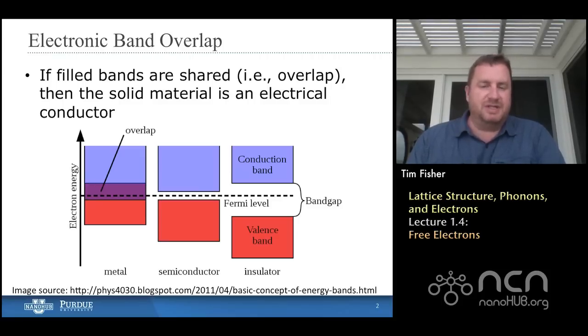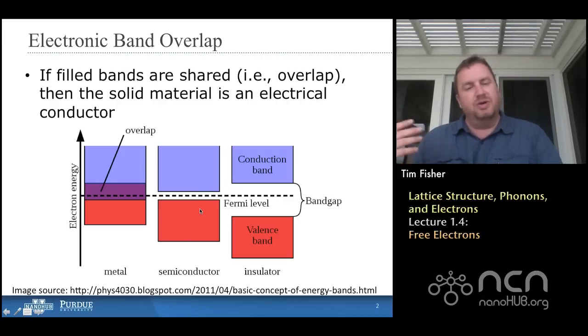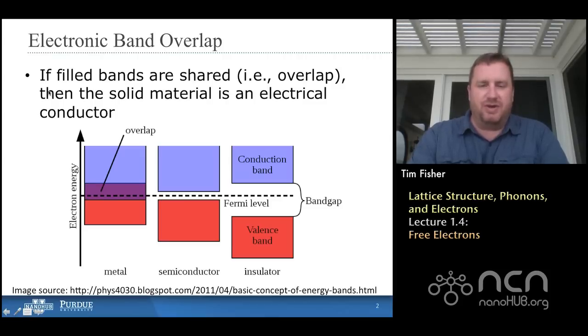If that gap exists, but it's fairly small, say of order of one electron volt, then we have the middle situation and we have a semiconductor. So there are some things that we can do as engineers and scientists to make these two bands communicate with each other. Even though at zero temperature and all other things being unaffected, then we would have the entire bottom band, called the valence band, occupied with electrons. And the entire top band would be unoccupied. That's the conduction band.